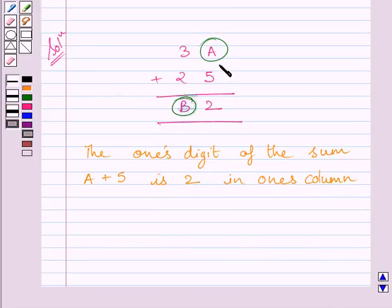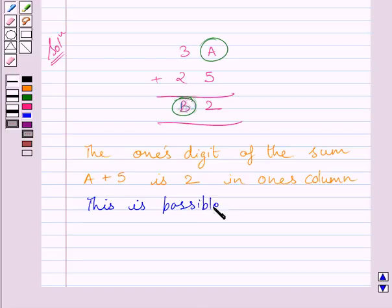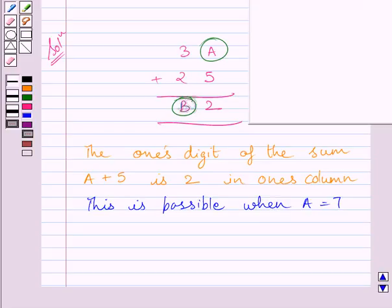Clearly you can see here in the ones column, sum of A and 5 has the units digit as 2, or we can say ones digit. This is possible when value of A is 7. We know that 7 plus 5 is 12 and ones digit of 12 is 2.